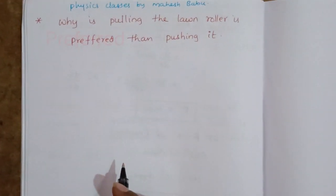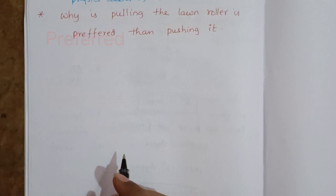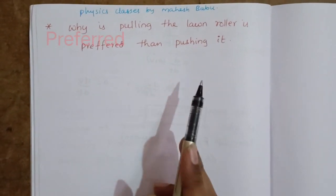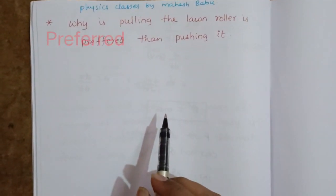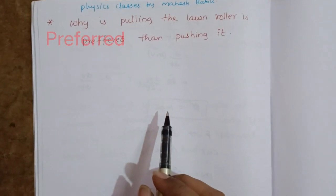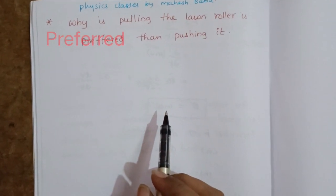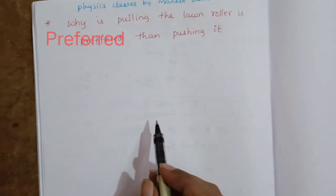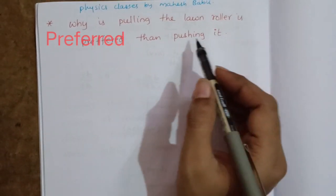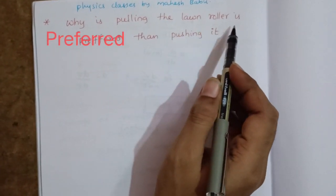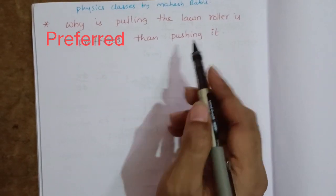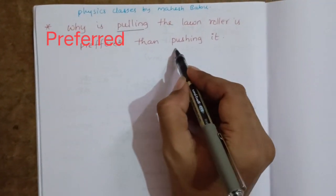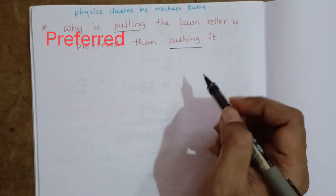Hi students, welcome to physics classes. Now we are discussing important short answer questions from laws of motion, class intermediate first year physics. The question is: why is pulling a land roller preferred over pushing?